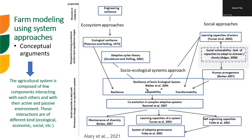In the last 20 to 25 years in the literature, we started to talk more about farm modeling using system approaches. There was a strong conceptual background behind these modeling tools, relating mostly to what today is stabilized as the socio-ecological systems approach, where the agricultural system is conceptualized as composed of few components interacting with each other and with their active and passive environment. Those interactions are of different kinds — ecological, economic, social — and that's why we call it socio-ecological systems.